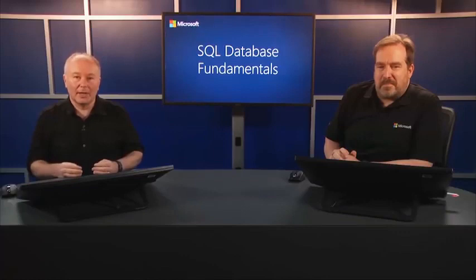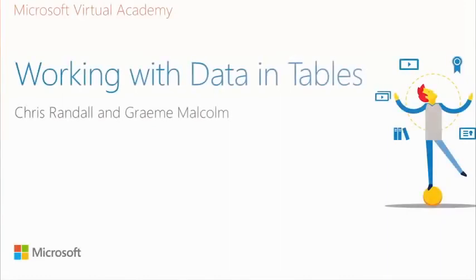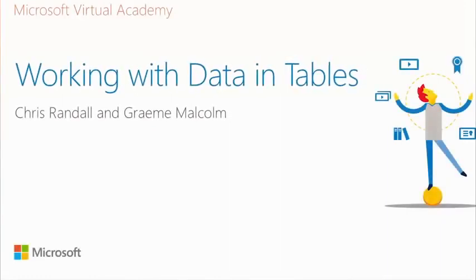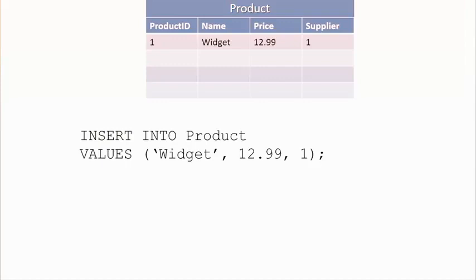Now let's turn our attention to getting data into tables. We'll use SQL for this — specifically the INSERT statement. So here's our table — if we just created it, it's empty. To insert some data, there is indeed an INSERT command. We INSERT INTO the table, simply specifying the values. We're using the position in the VALUES clause to correlate with the column position in the table. Notice I haven't specified anything for product ID — because that was the identity column, it's going to auto-number.